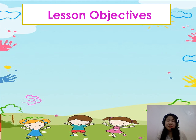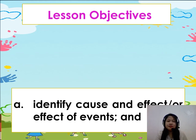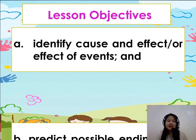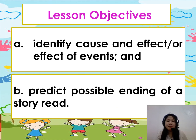Before we begin our lesson, let's have our lesson objectives. At the end of the lesson, the learner will be able to identify cause and effect of events and predict possible endings of a story read.